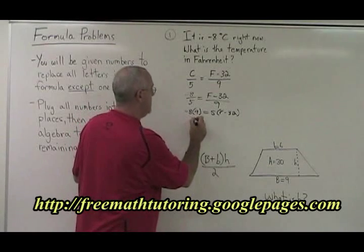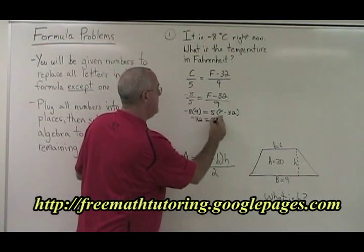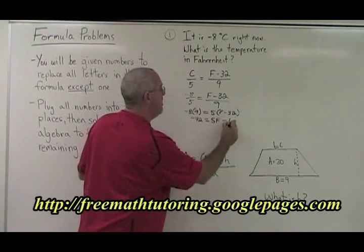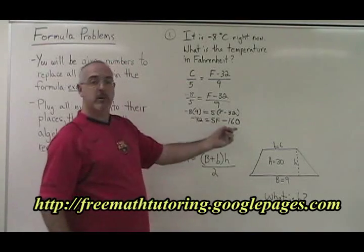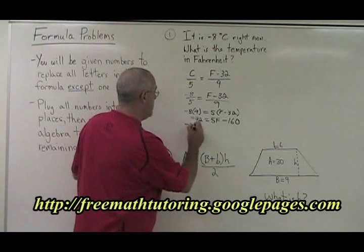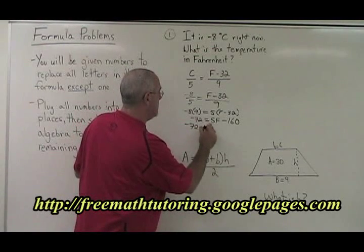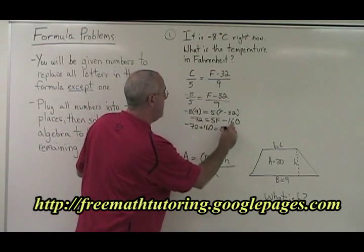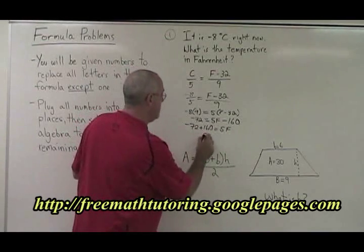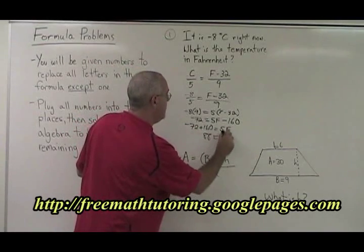Negative 8 times 9 is negative 72. 5 times F is 5F. 5 times negative 32 is minus 160. Let's move the 160 to the other side. Negative 72 plus 160 equals 5F. Negative 72 plus 160 is equal to 88, equals 5F.